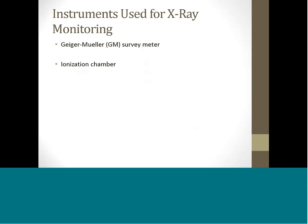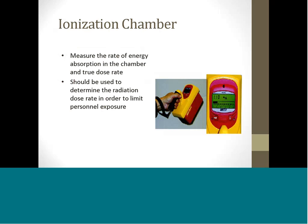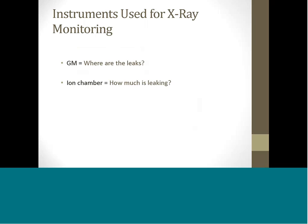Two different radiation detection instruments are used to monitor radiation: a Geiger-Mueller GM survey meter and an ionization chamber. The GM survey meter is a very sensitive instrument for detecting extremely low levels of radiation. It is used to detect leaks in shielding or low intensity scattered radiation. The GM survey meter should not be used to measure a dose rate — it tells you where the leak is. The ionization chamber measures the rate of energy absorption in the chamber and a true dose rate. This should be used to determine the radiation dose rate in order to limit personnel exposure. The ionization chamber answers the question of how much is leaking, while the GM survey meter answers where the leaks are.